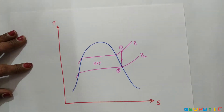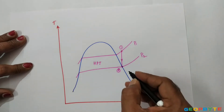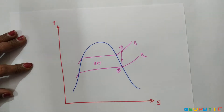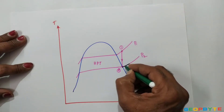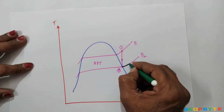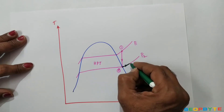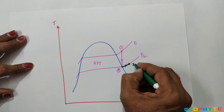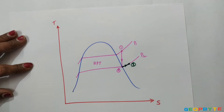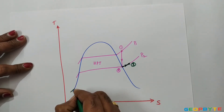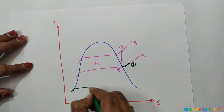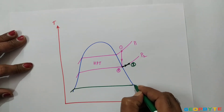After expansion in the high pressure turbine, the steam is sent back to the boiler where it is reheated at constant pressure. Because of the reheating, the steam becomes superheated again. Let 2 to 3 represent the reheating process of the steam.